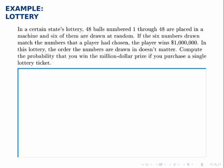We want to compute the probability that you win the million dollar prize if you purchase one lottery ticket. So the fact that the order doesn't matter is significant. That means that this is a combination problem.